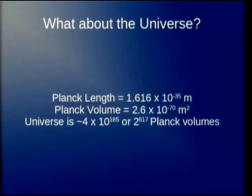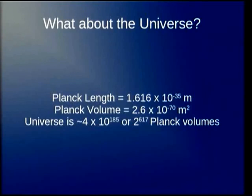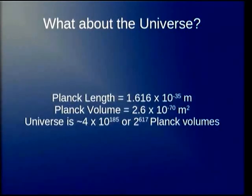Then we use the observable universe. The universe is a certain age, light travels at a certain speed, so there's only a certain volume. The observable universe is some number of cubic meters. We can individually identify every single Planck volume in the observable universe, and that's roughly a 600-digit binary number, or 300 decimal digits. So if you want to measure anything in the real world, 256-bit numbers are roughly good enough — you don't need any bigger than that.